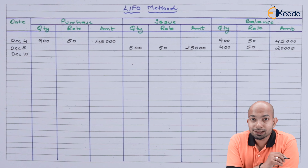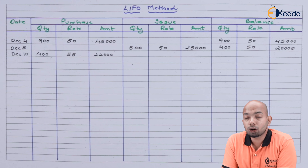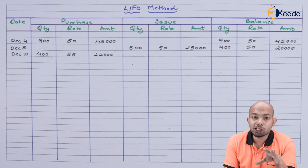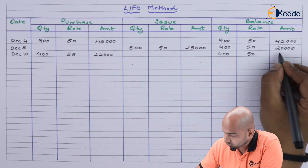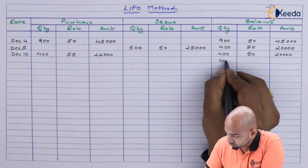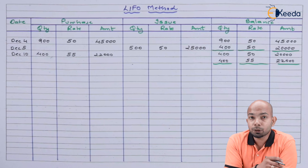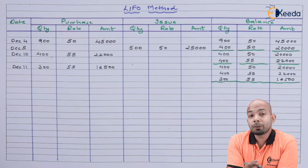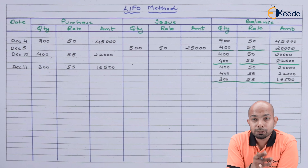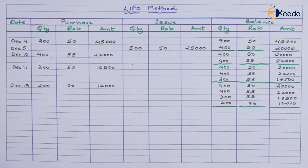On December 10 there was another purchase. Under LIFO, while recording the balance, you don't combine the amounts — you keep each lot separately as it is. On December 11 there was another purchase, and on December 19 also there was a purchase, so balances are mentioned accordingly for each lot.